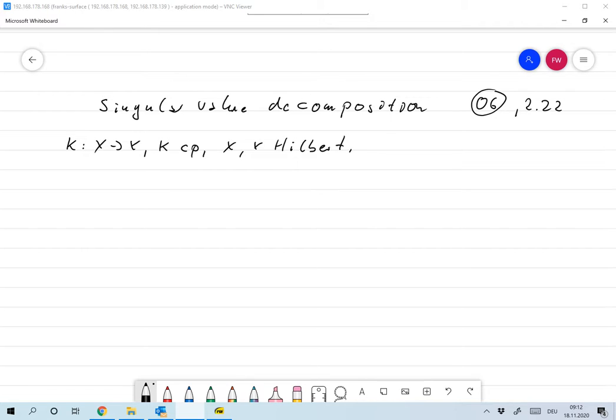So for the following, I will more or less always assume that K is a compact operator, compact linear operator from X to Y and X and Y are Hilbert spaces.